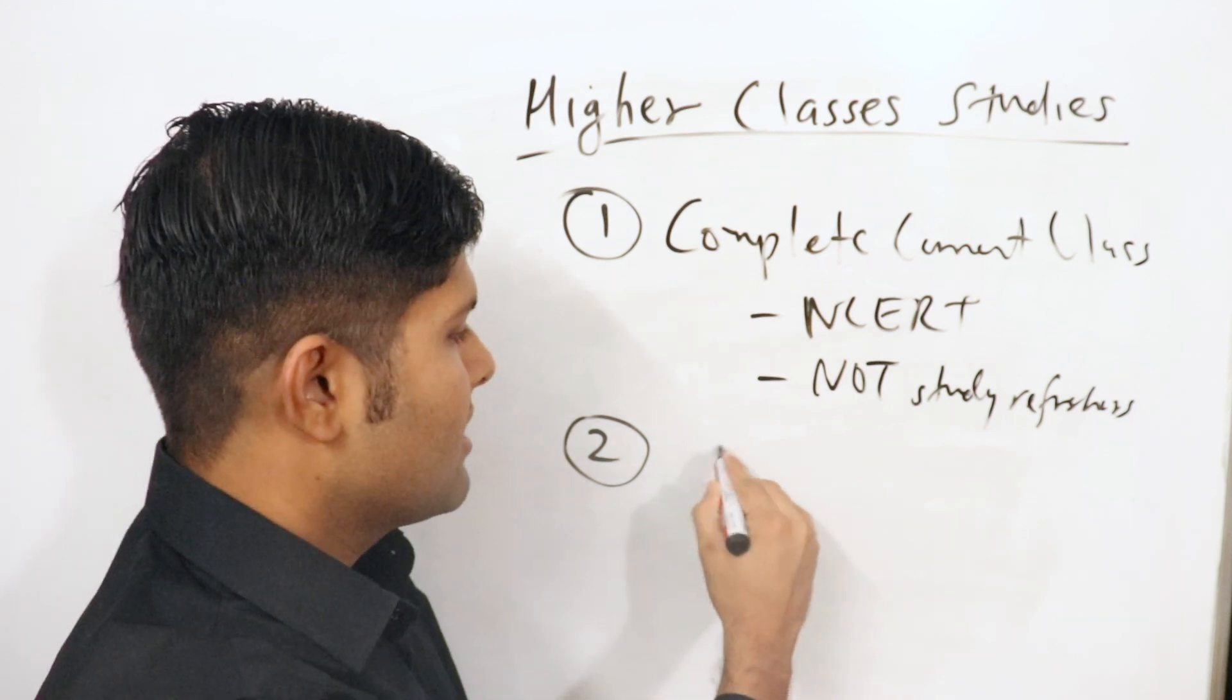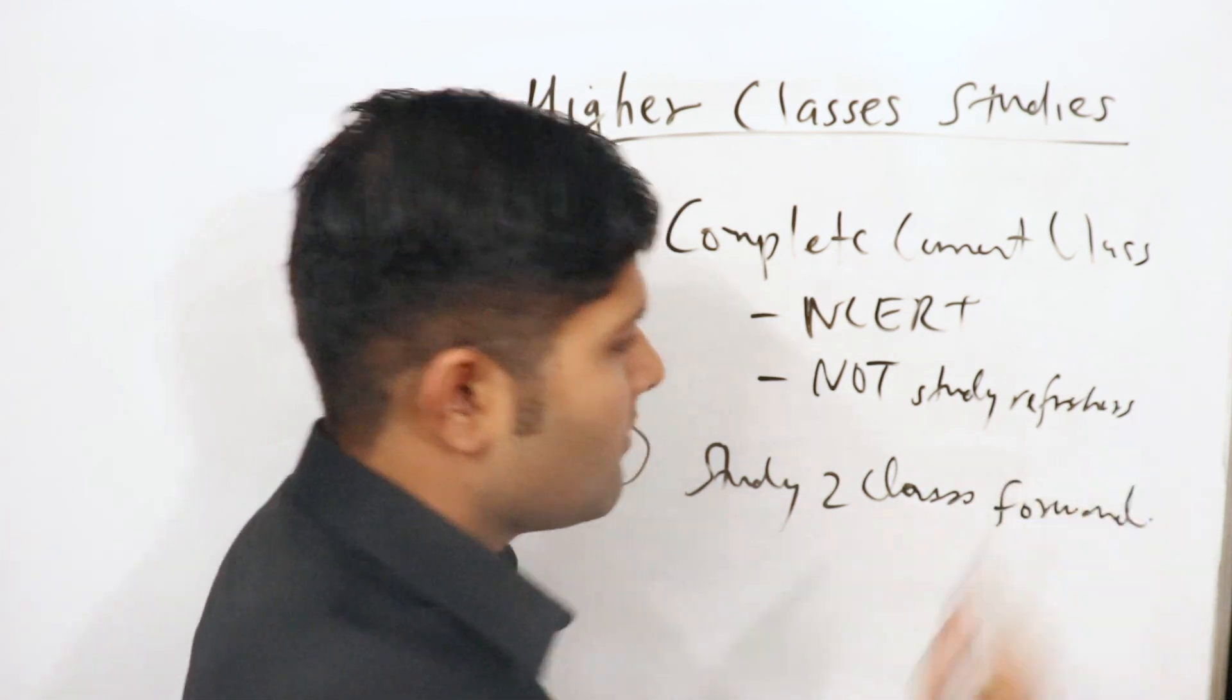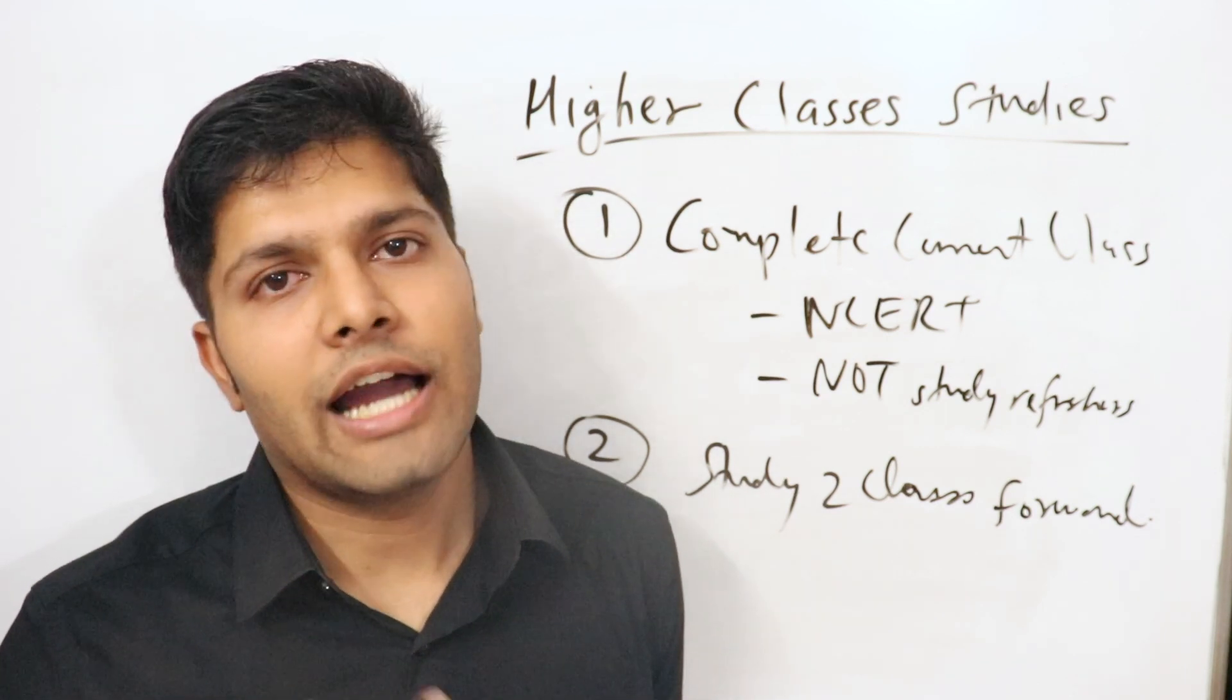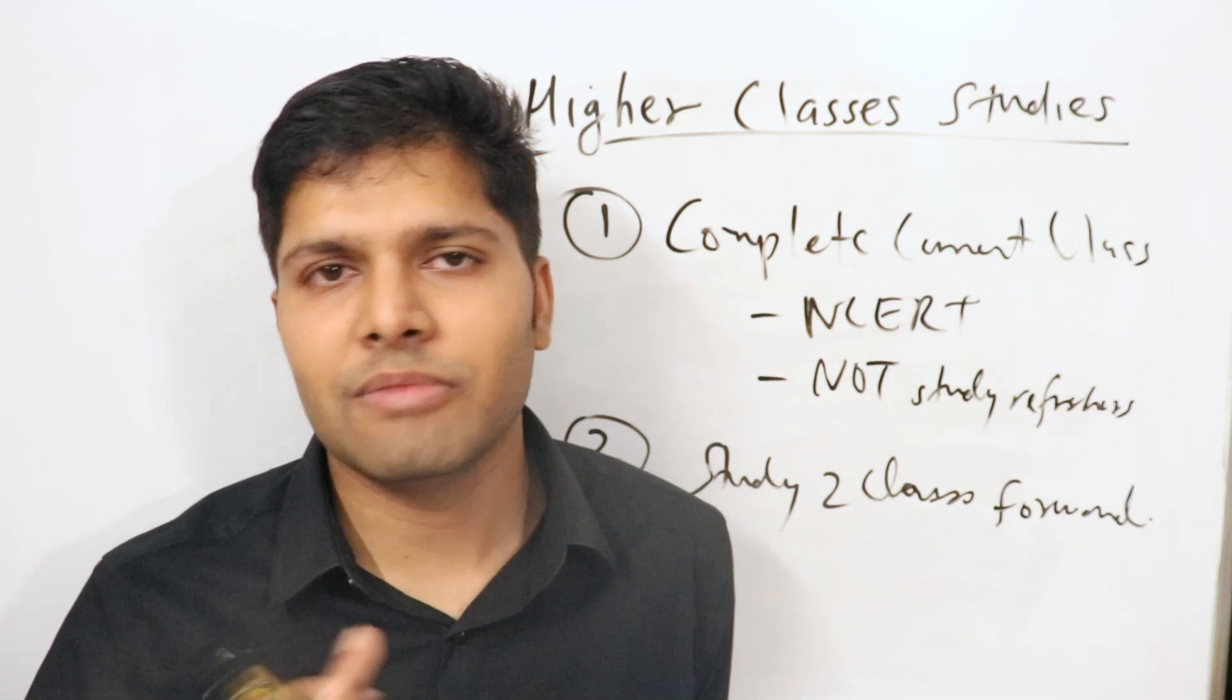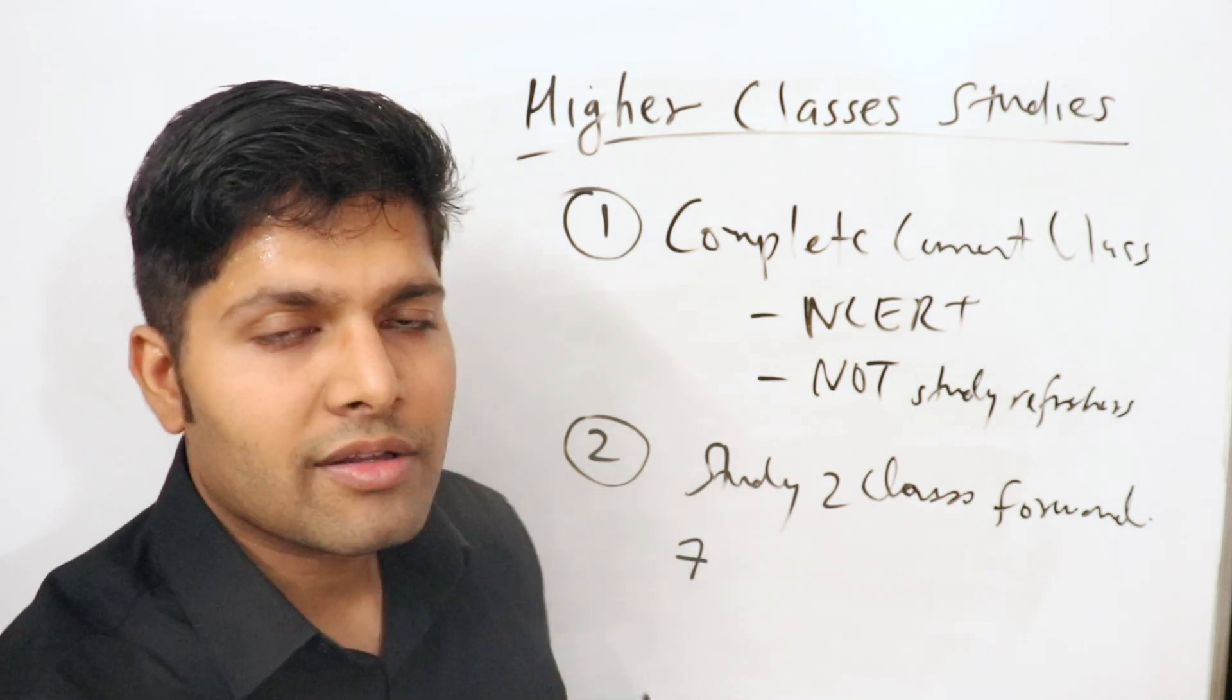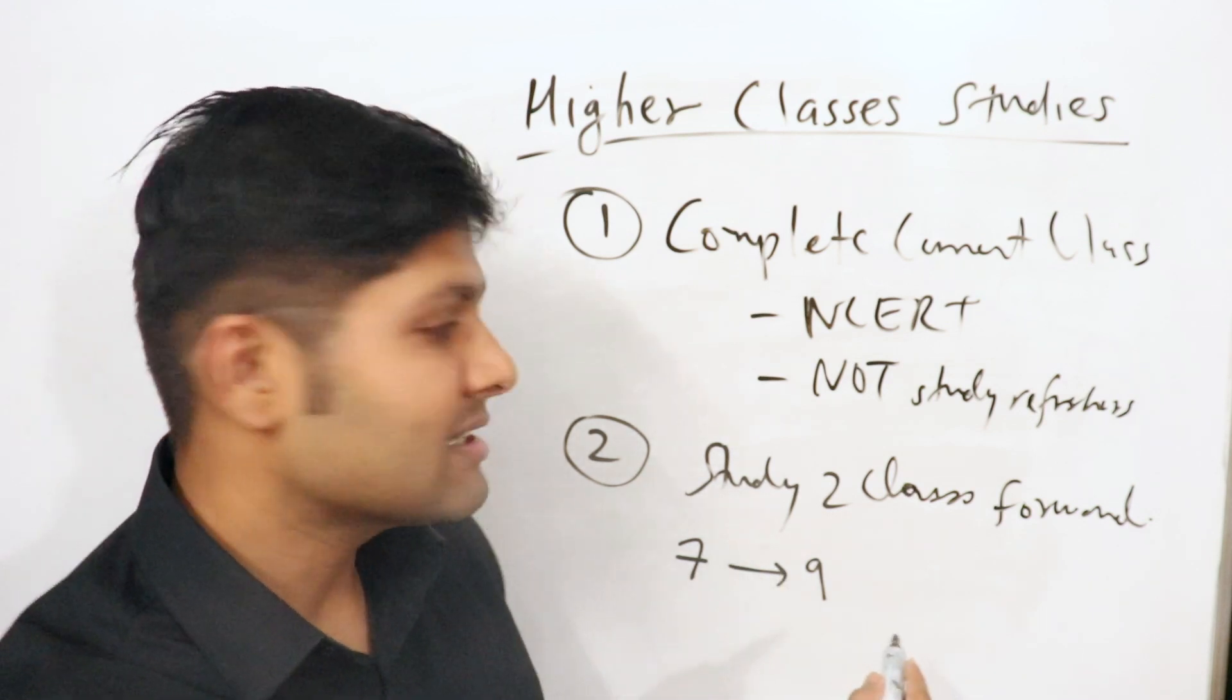Second is study two classes forward. What does this mean? If you have noticed, I'm talking about the CBSE or the NCERT book here. In ICSE it could be a bit different. Since most of you are studying in NCERT or CBSE board, I will take that example, but I am pretty sure this applies to other boards as well. If you check the next book of class 7th, you will see that it has topics in common with class 9th, and your class 9th textbook has the same topics as class 11th.